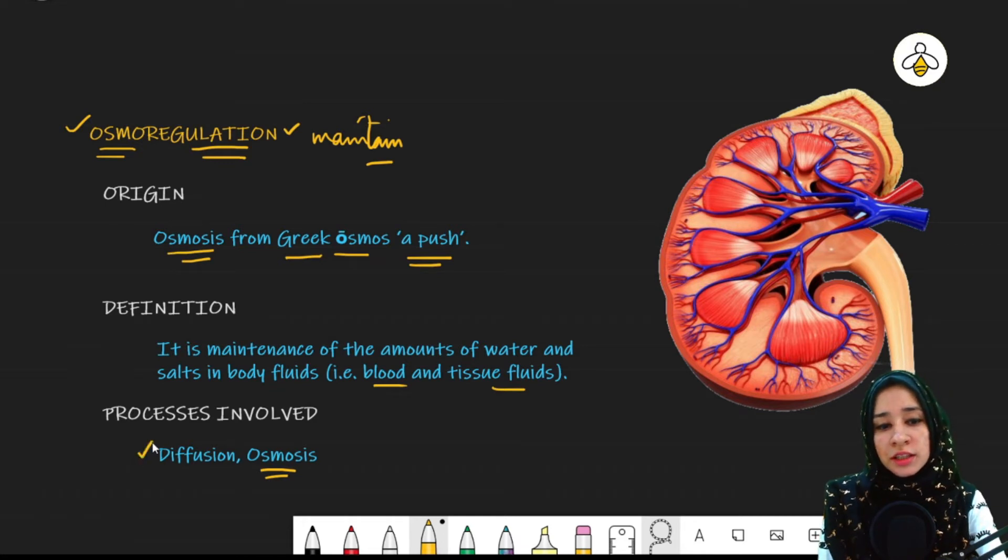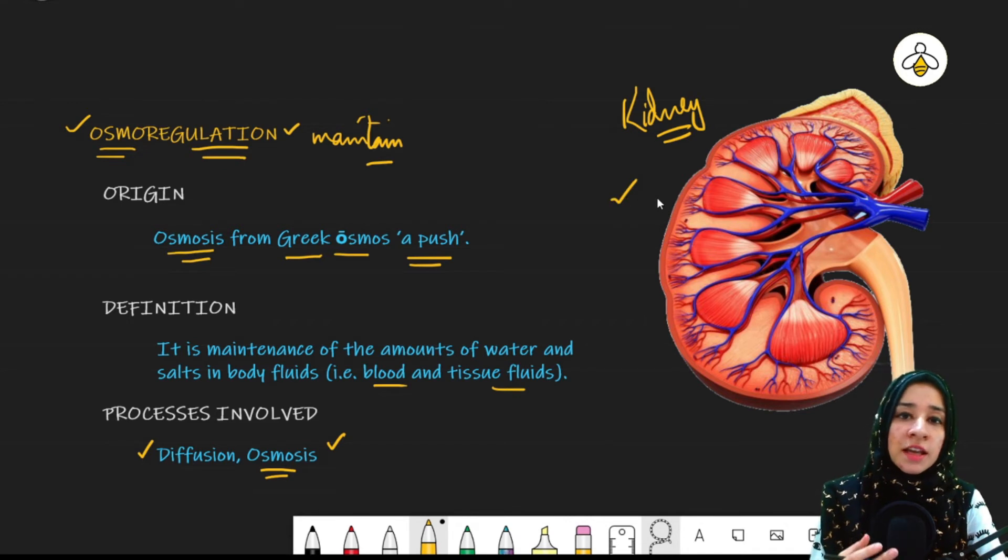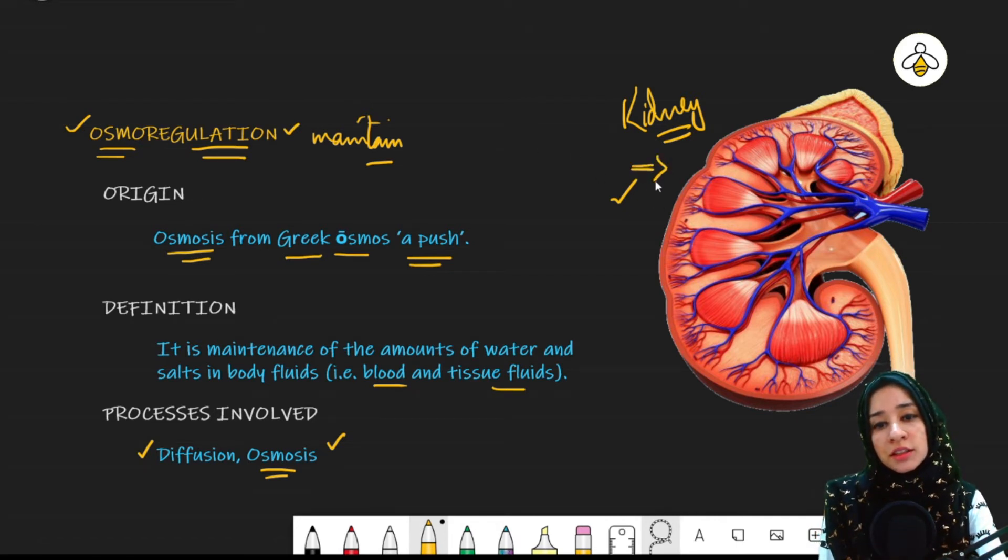And there are two processes involved in it. Diffusion and osmosis which play a major role to perform this function. And within our body, the major organ that is responsible for osmoregulation is the kidney. It is playing a major role. We have water or solute content in the body that is being controlled with the help of this organ. So this was all about the osmoregulation.